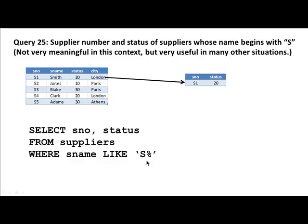We're saying it looks like it starts with an S followed by — I don't care — any number of characters, because all we care about is it starts with an S. It could just be S, or it could be S followed by 500 characters, 10 characters, one character, or zero characters — it doesn't matter. All it has to do is start with an S. To achieve that, you use the wildcard characters that SQL has.